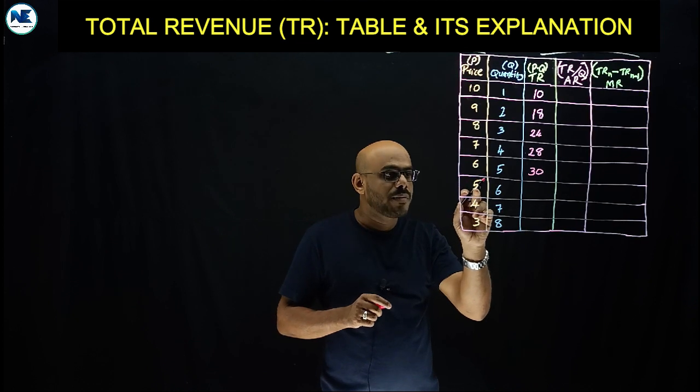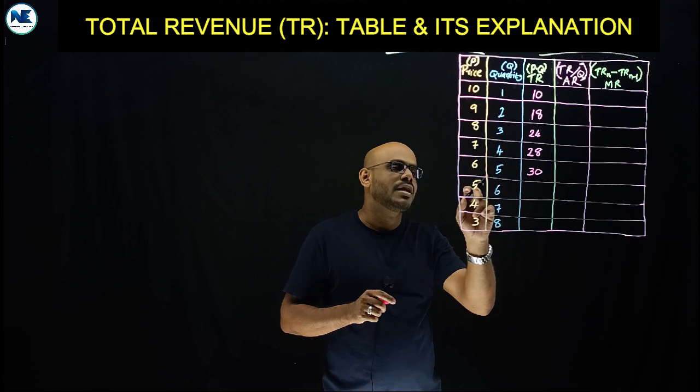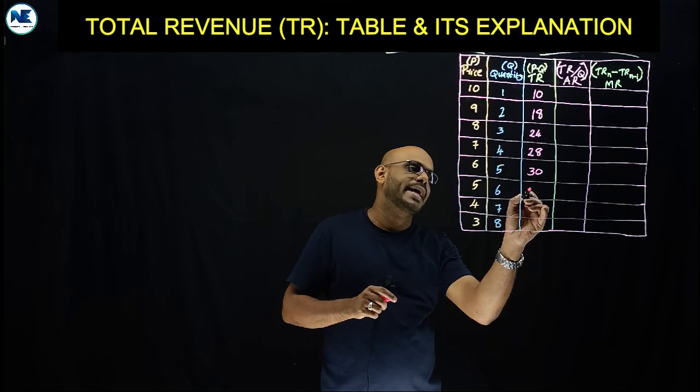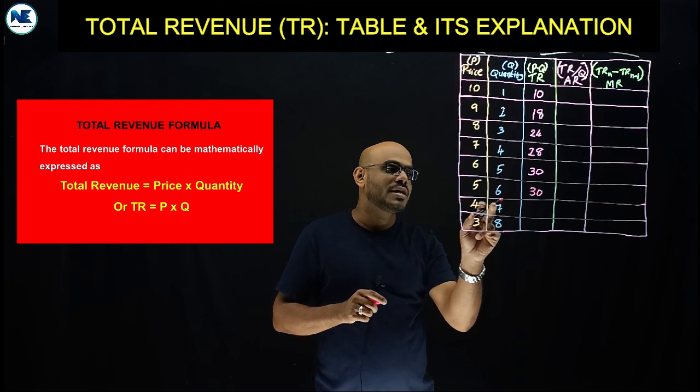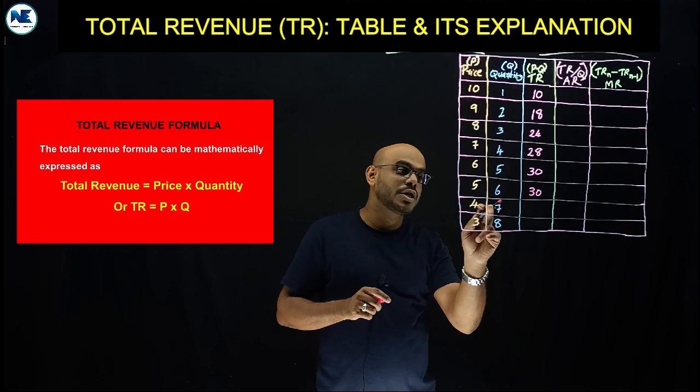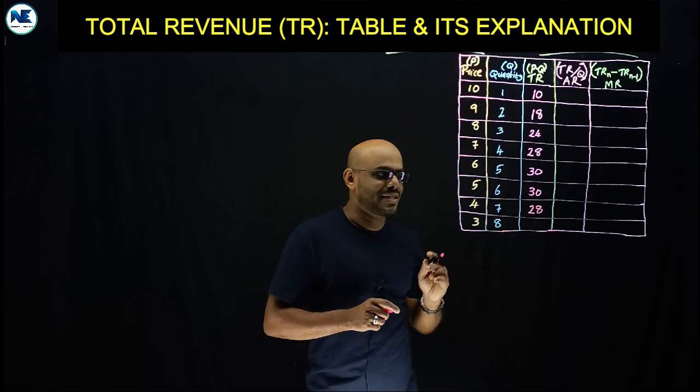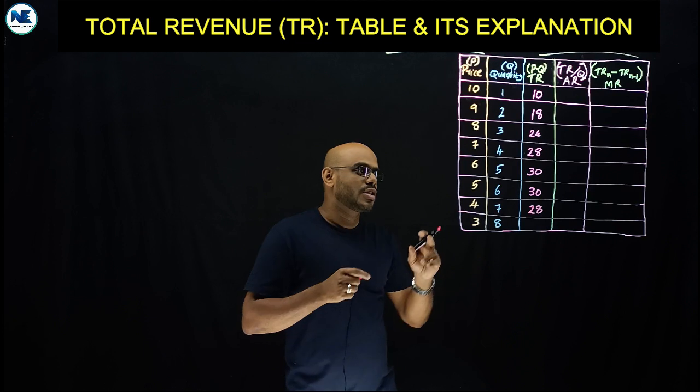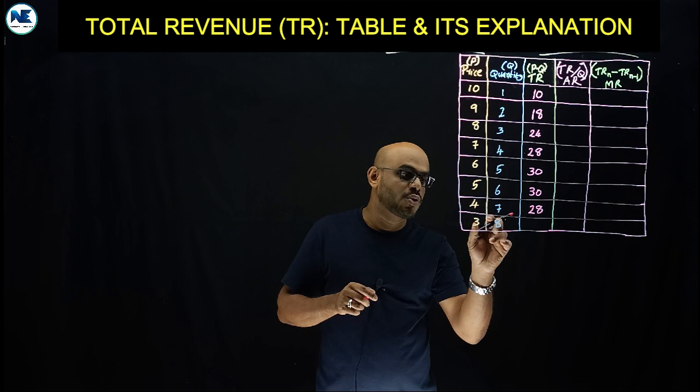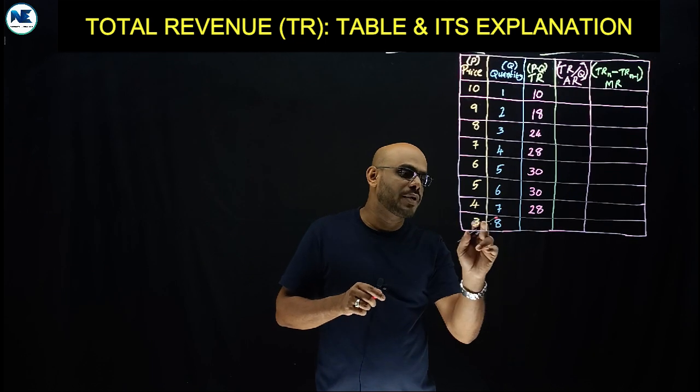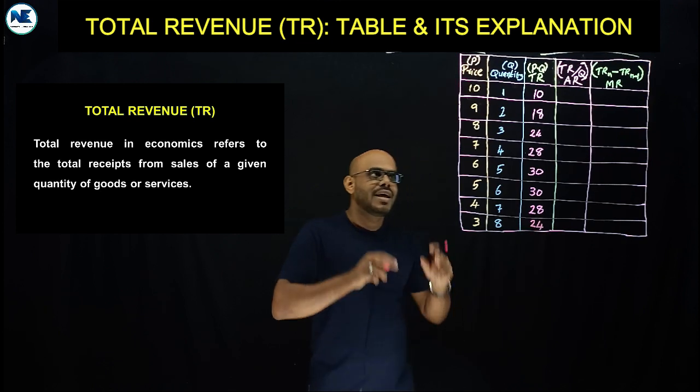Price declined to 5, quantity sold increased from 5 to 6, then total revenue is 5 into 6, which is 30. Price declined to 4, so 4 into 7 equals 28. Again price declined to 3, quantity increased from 7 to 8, total revenue is 3 into 8, which is 24.